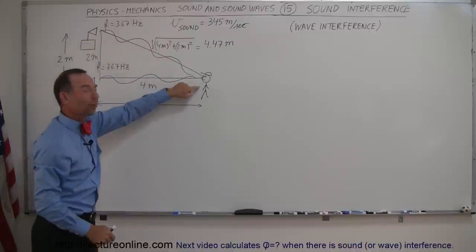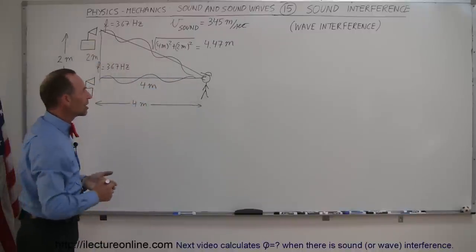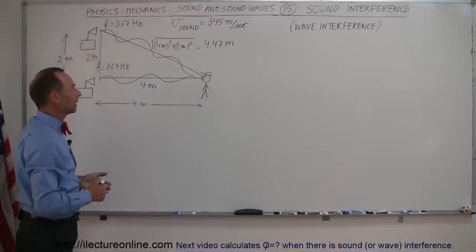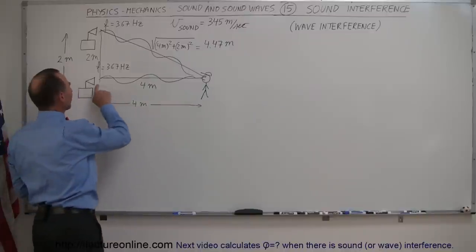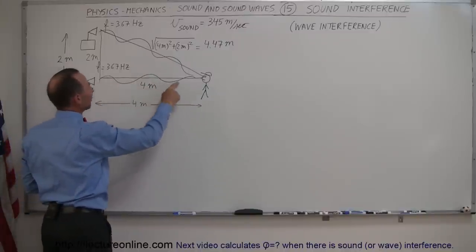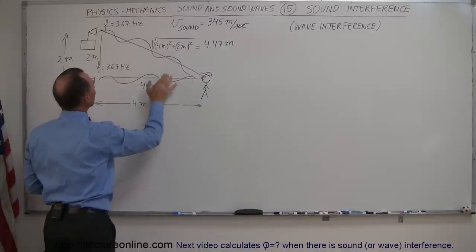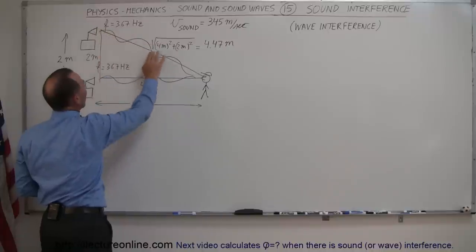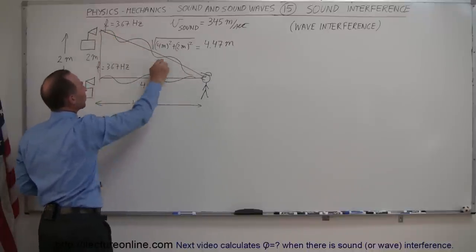When this person is standing right in that spot, what does that person hear? Well, notice that the distance this sound wave has to travel is four meters. The distance that this sound wave has to travel would be the hypotenuse of this triangle.